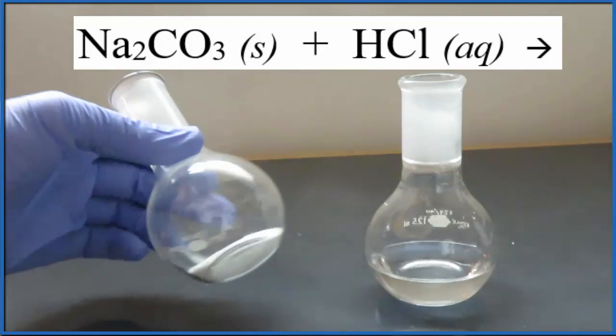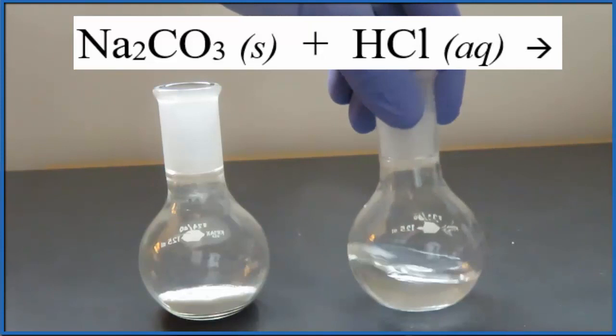Let's take a look at what happens when we put Na2CO3, that's sodium carbonate, the white powder, with HCl. HCl, that's the liquid, and that's a strong acid.